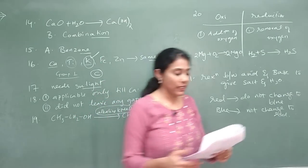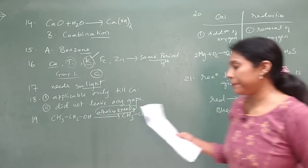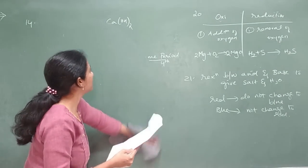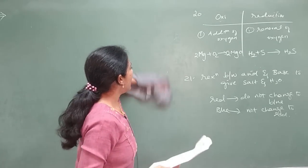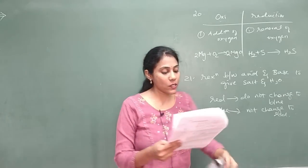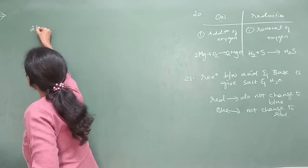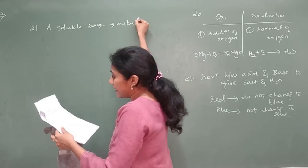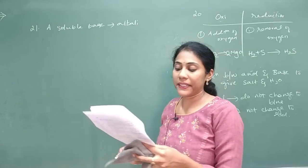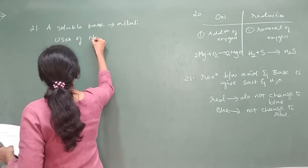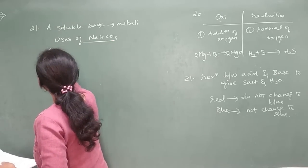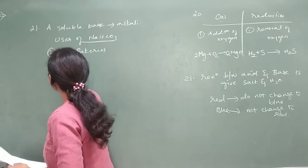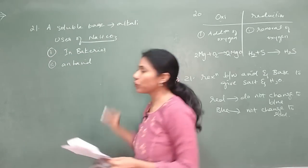The OR question for 21: what are alkalis? Write two uses of sodium hydrogen carbonate (baking soda). A soluble base is called an alkali. Uses of NaHCO₃: first, it can be used in bakeries to make fluffy and soft cakes. Second, it can be used as an antacid.